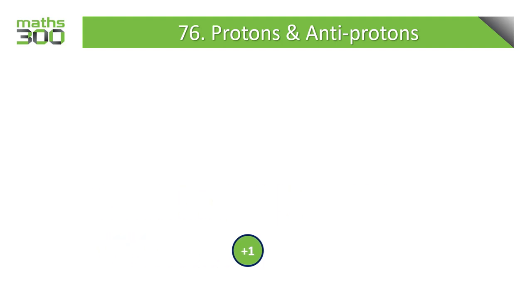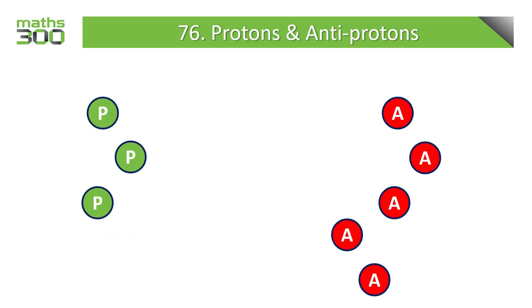If we now have more antiprotons than protons, we can see that we can create three zero pairs, and we still have two antiprotons left over.